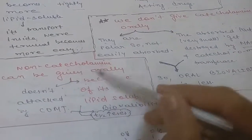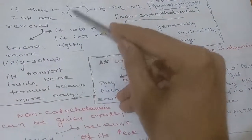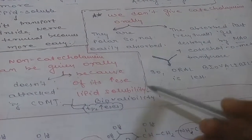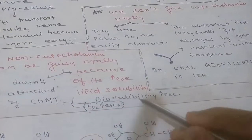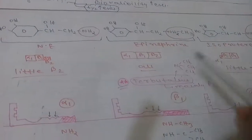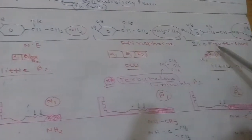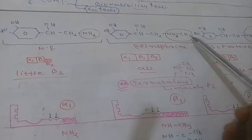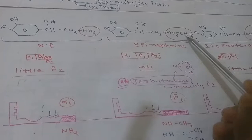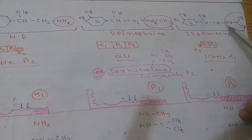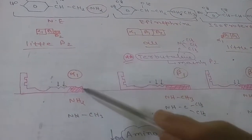Non-catecholamines also have absence of the two OH groups, making them more lipid-soluble. Increased lipid solubility increases absorption, so bioavailability increases and the half-life is extended. Looking at drug structures: norepinephrine has only an amine group, epinephrine has one extra methyl group on the amine, and isoproterenol has an isopropyl group on the amine.